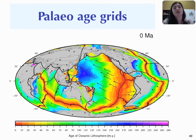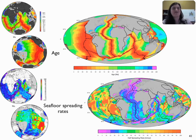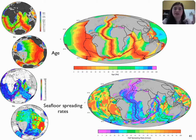By creating these paleo age grids, we can do other things. We can look at seafloor spreading rates — taking the present day age grid or the paleo age grids, we can extract what we think the seafloor spreading rates are in particular areas, and get an idea of what the seafloor spreading rates were in the past based on our assumptions.